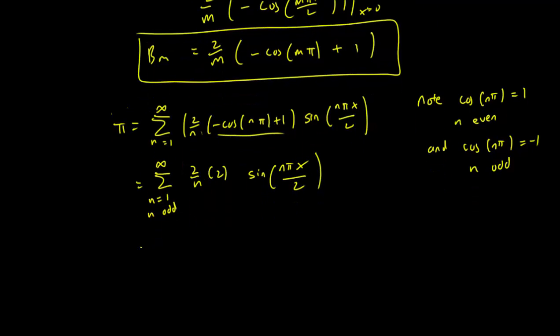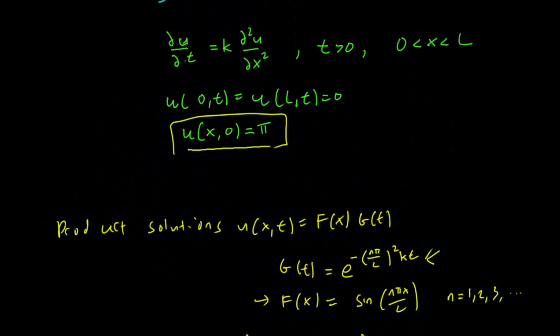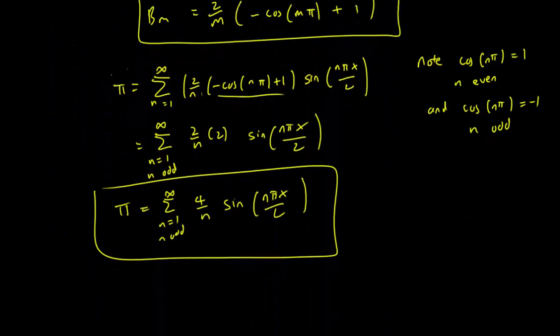And this of course simplifies to the sum of n equals 1 and odd, 4 over n sine(n pi x over L). That's our expression for pi. So we wrote down our initial condition in terms of a sum of signs, just as we required.